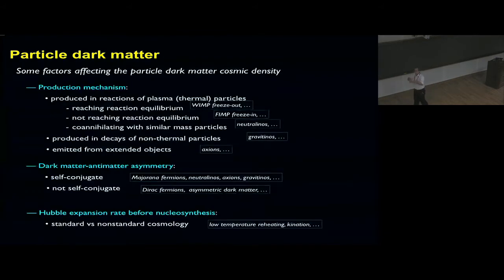When we go even more into detail, there are many other things. Here are some factors affecting the particle dark matter cosmic density in the production mechanism. Either in the plasma, reaching reaction equilibrium—that's the WIMP freeze-out—not reaching reaction equilibrium, that's the WIMP freeze-in. Co-annihilating with similar mass particles, like the neutralinos. Could be produced in the case of non-thermal particles like the gravitinos, or emitted from external objects like the axions.